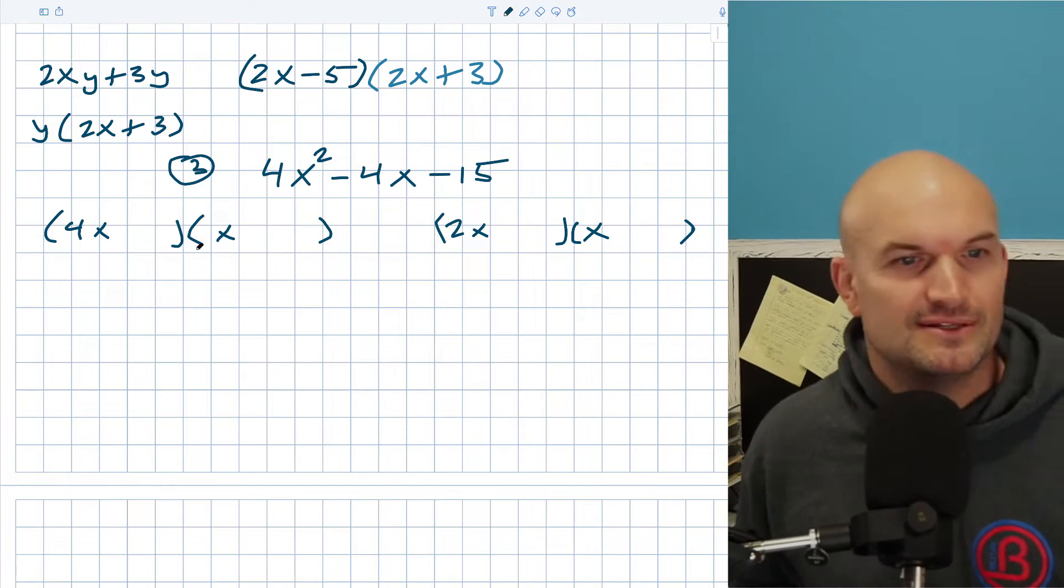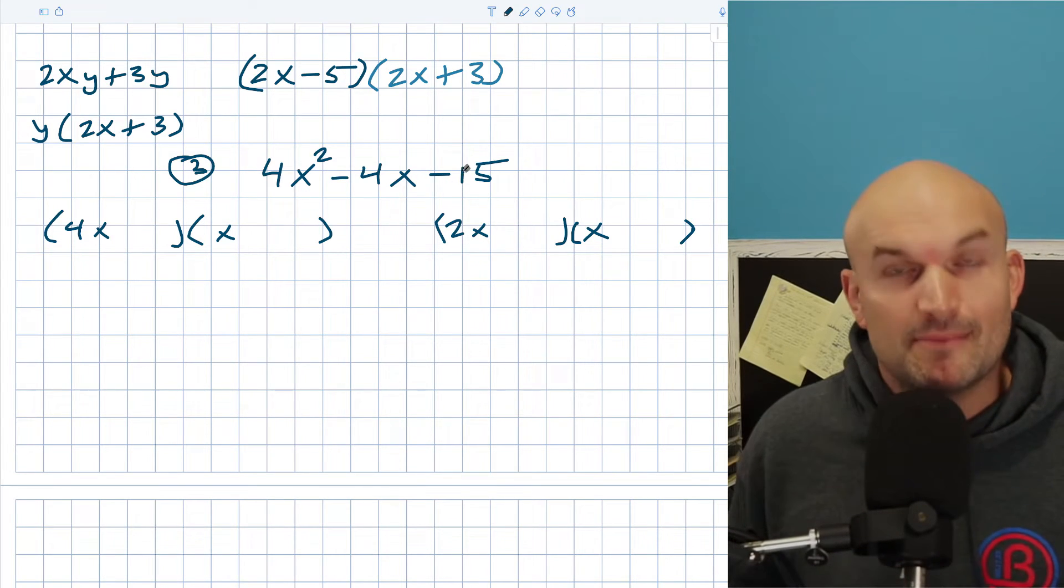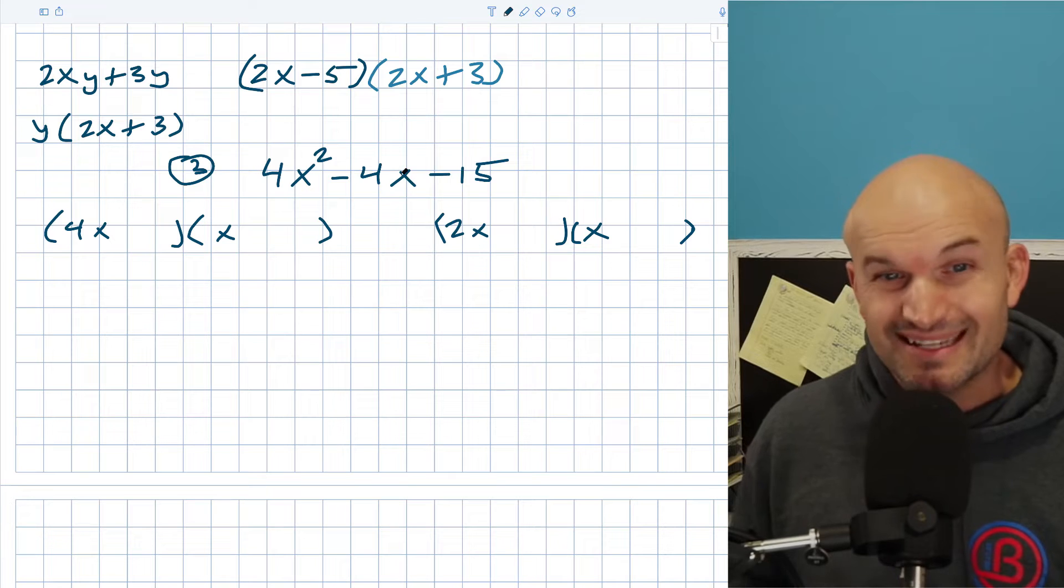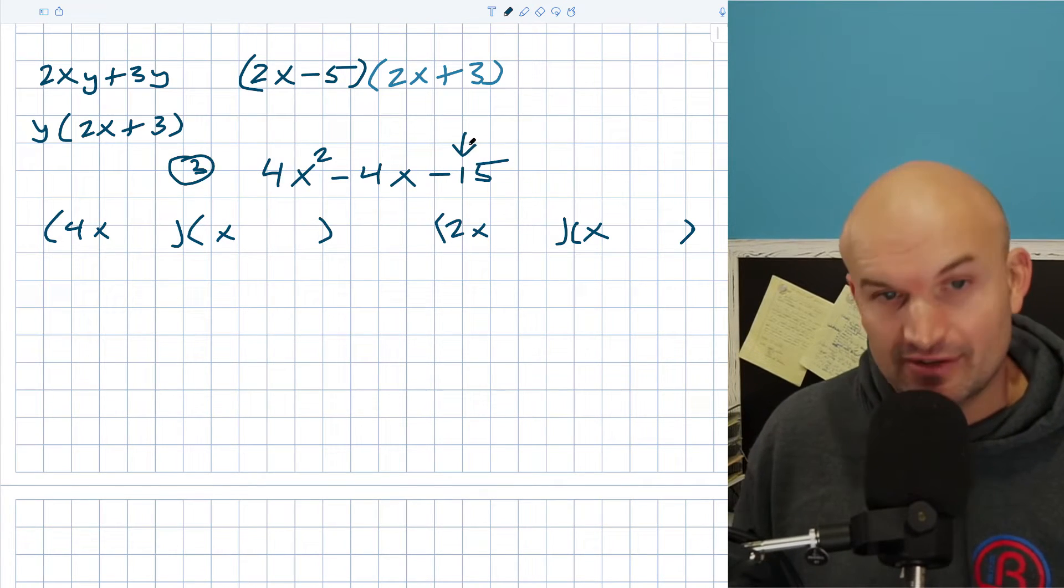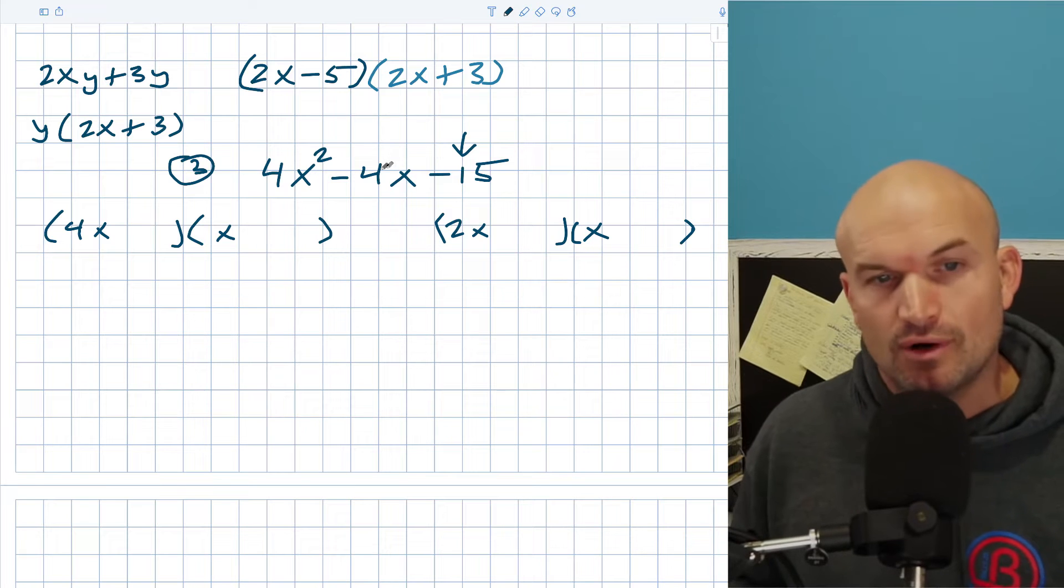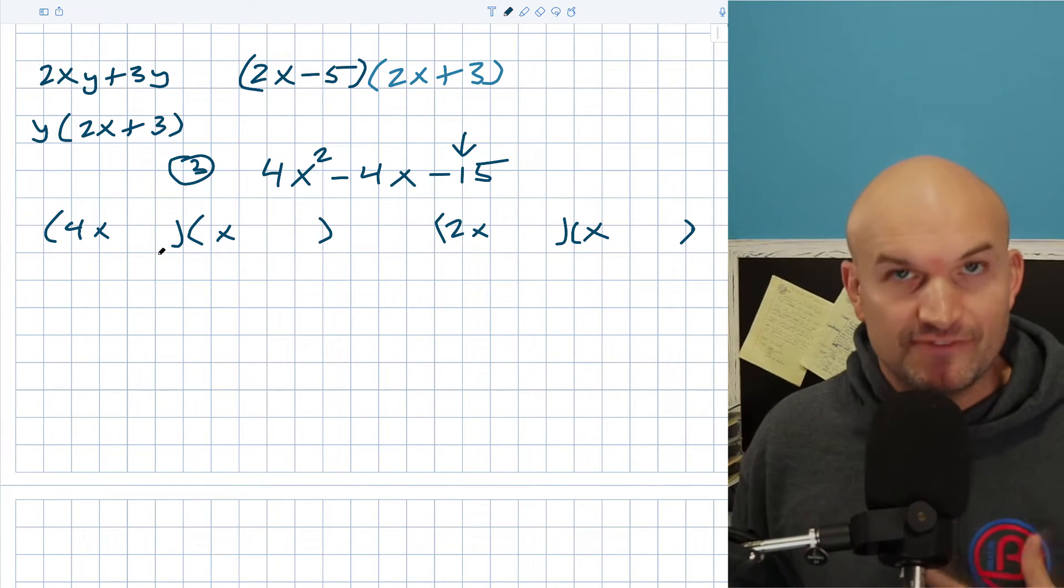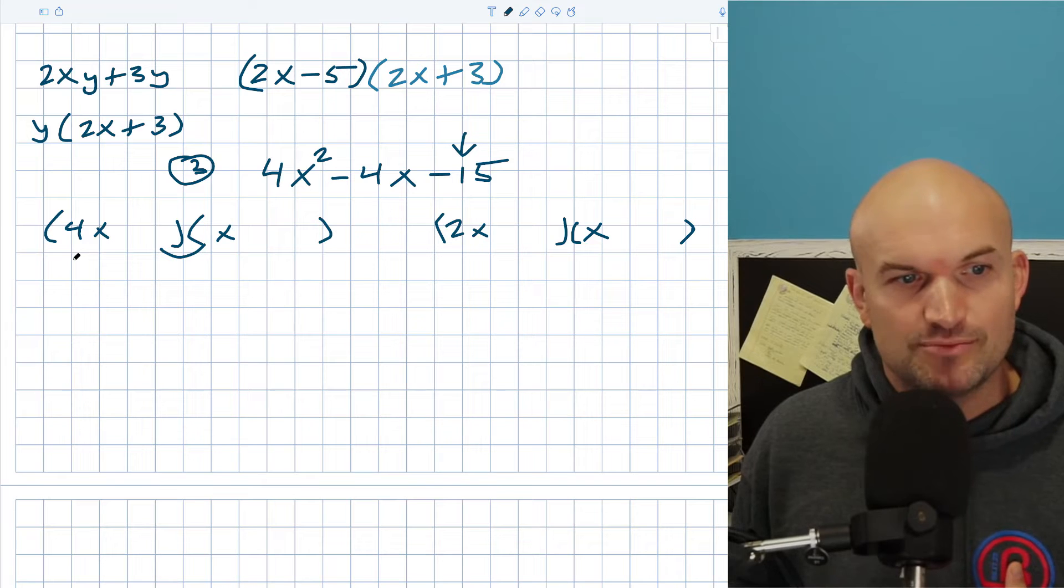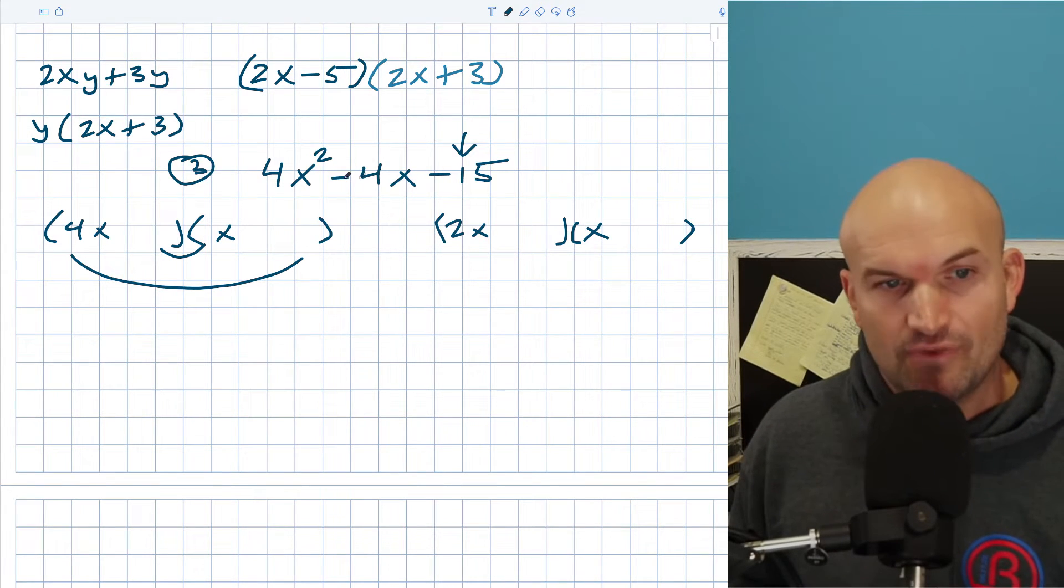Now, we already know the answer, so let's pretend we don't know the answer. Now what I want to do is think about my factors for 15. Again, this is a negative 15, right? So what we're doing is we're looking for the difference of our two products, the inner and the outer. The difference of the two products needs to add to give us a negative four.